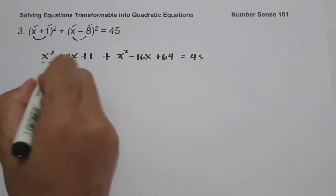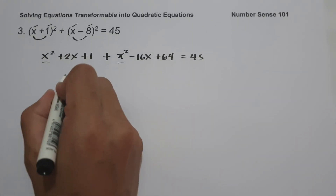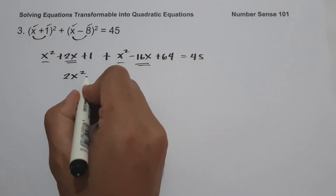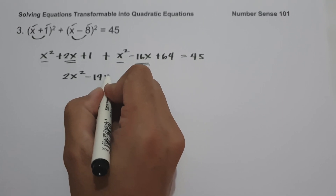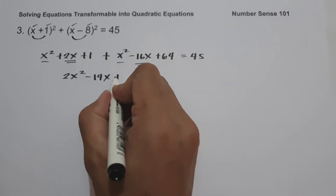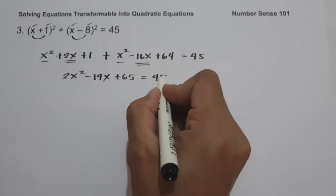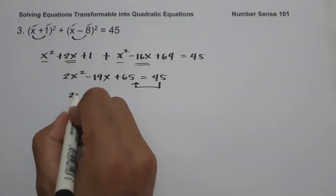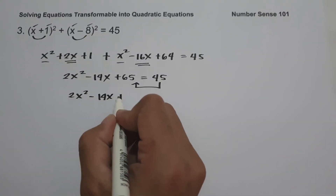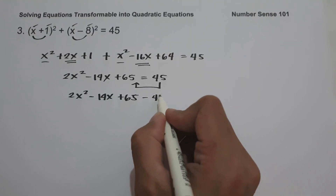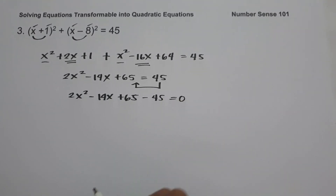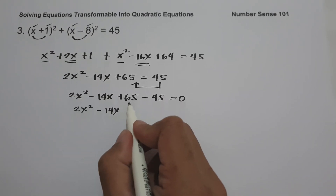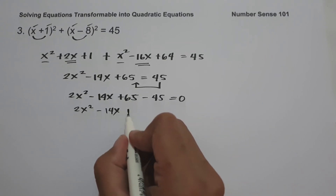Combining like terms: x squared plus x squared is 2x squared; 2x minus 16x is negative 14x; and 1 plus 64 is 65, equals 45. Moving 45 to the other side gives us 2x squared minus 14x plus 65 minus 45 equals 0, so 2x squared minus 14x plus 20 equals 0.